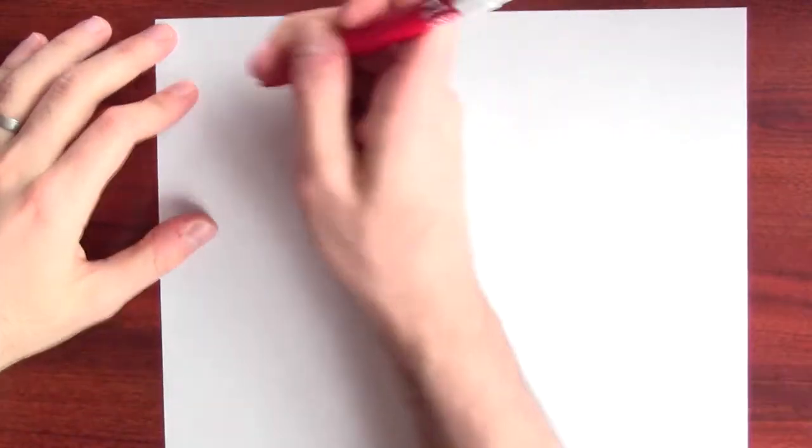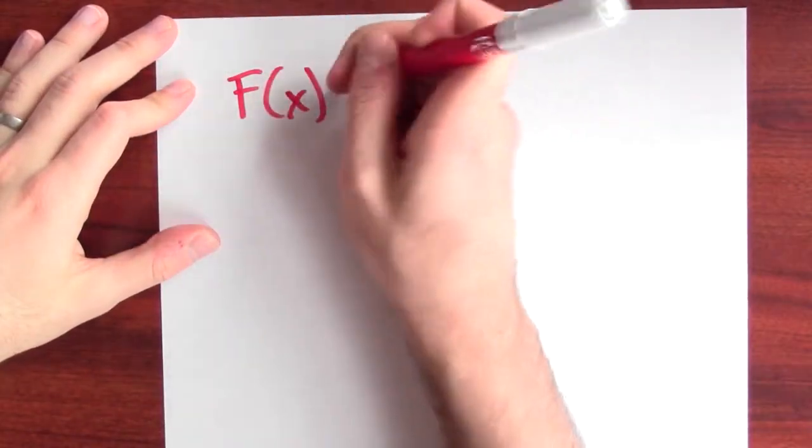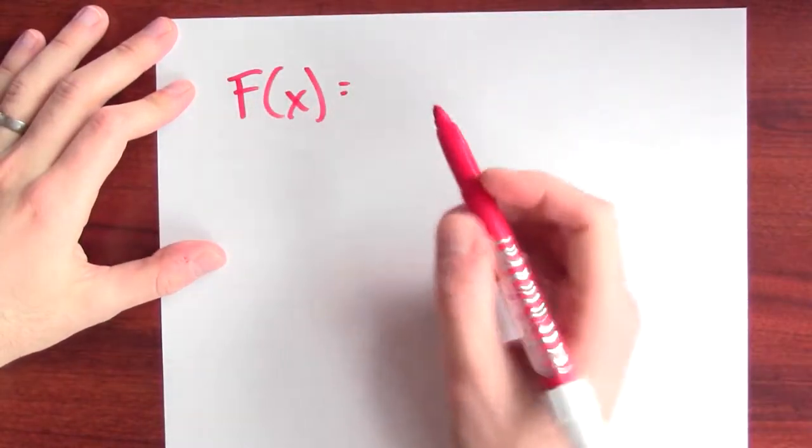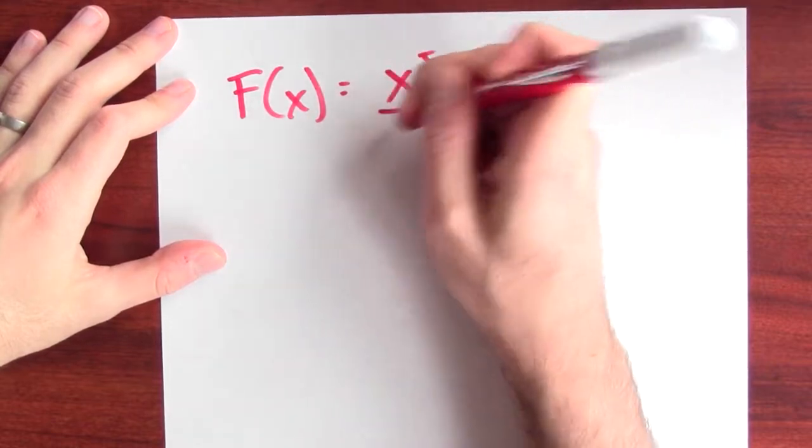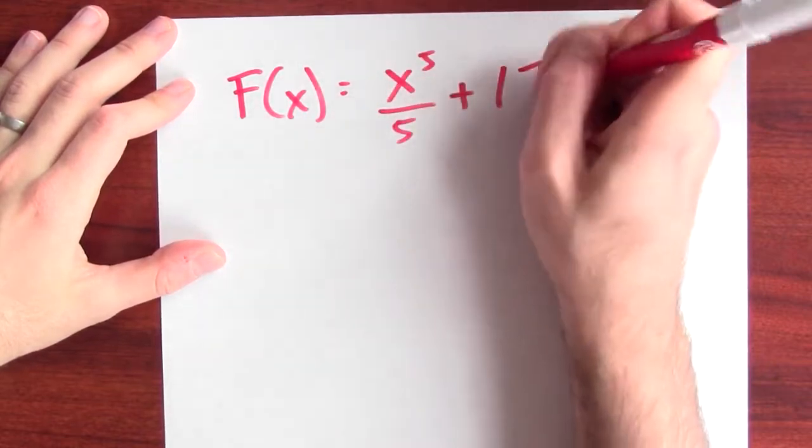And it doesn't matter which antiderivative I pick. So, just to emphasize that point, let's be a little bit ridiculous and pick my antiderivative that I'm calling big F to be x to the 5th over 5 plus 17, right?